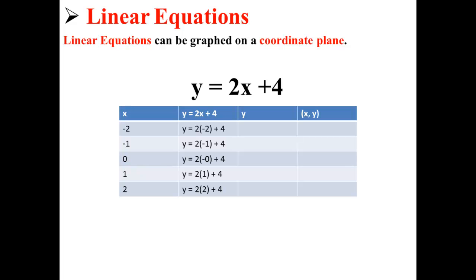Here, I've selected some random x's from negative 2 to positive 2. We plug them into the equation to find out what y is. For example, for negative 2, y is equal to 2 times negative 2 plus 4. We solve for all these equations to get our y's and then create our ordered pairs.